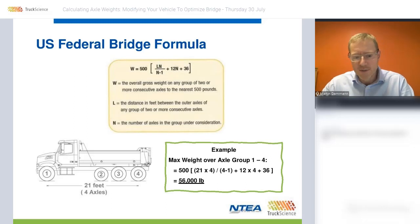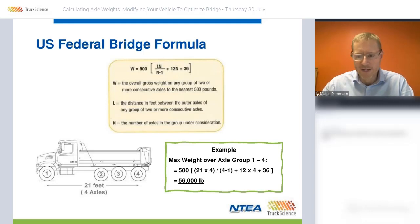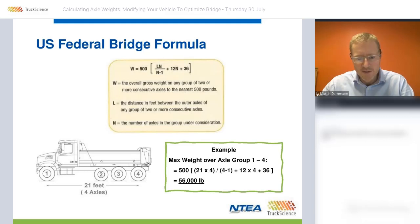To describe the distance in more detail: it is measured in feet and is measured between the outer axles of any axle group. In this example, the distance from the center of the front axle to the center of the rear-most axle is 21 feet, and there are four axles in the group.